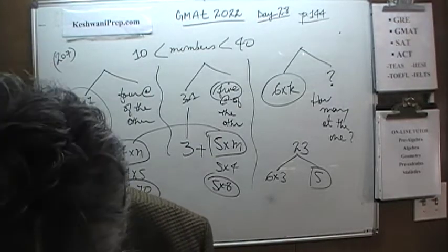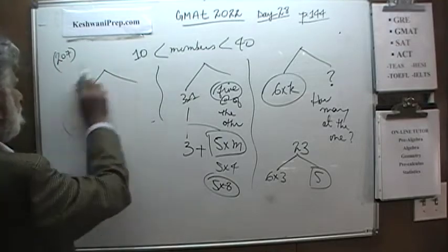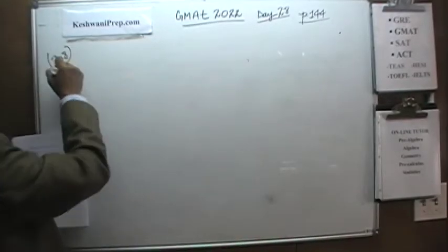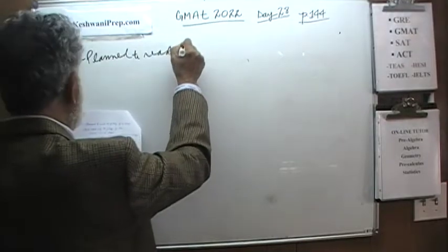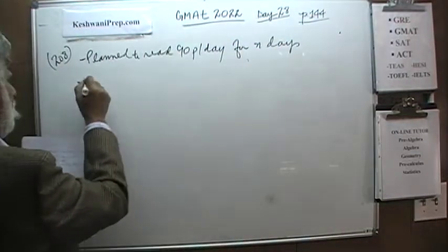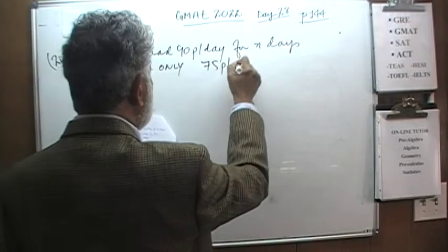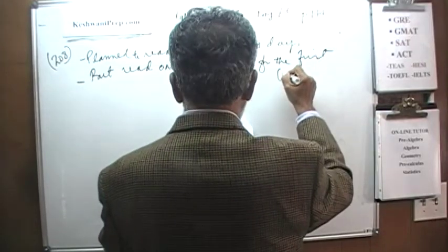Problem 208 is a straightforward algebra problem. We are told that we planned to read 90 pages per day for n days. But what happened was that we only read 75 pages per day for the first n−6 days.